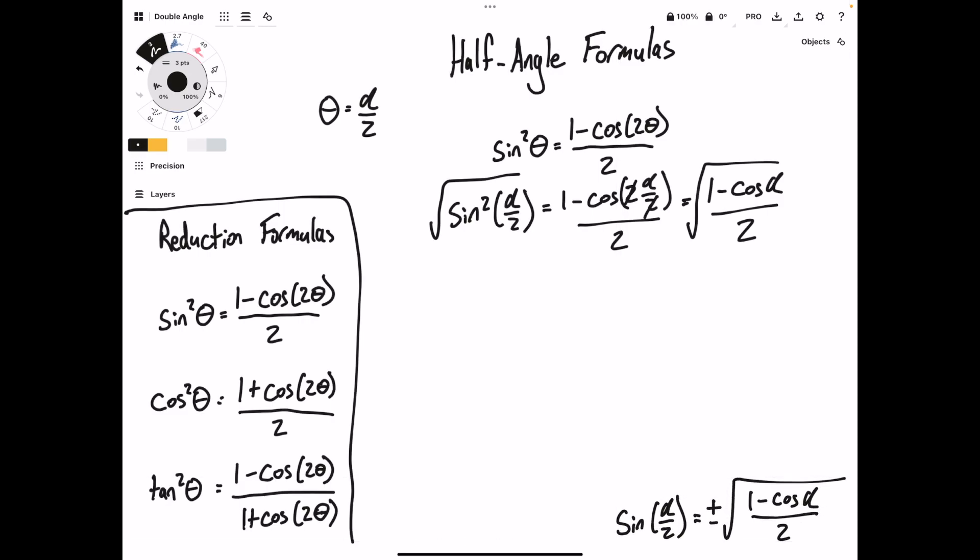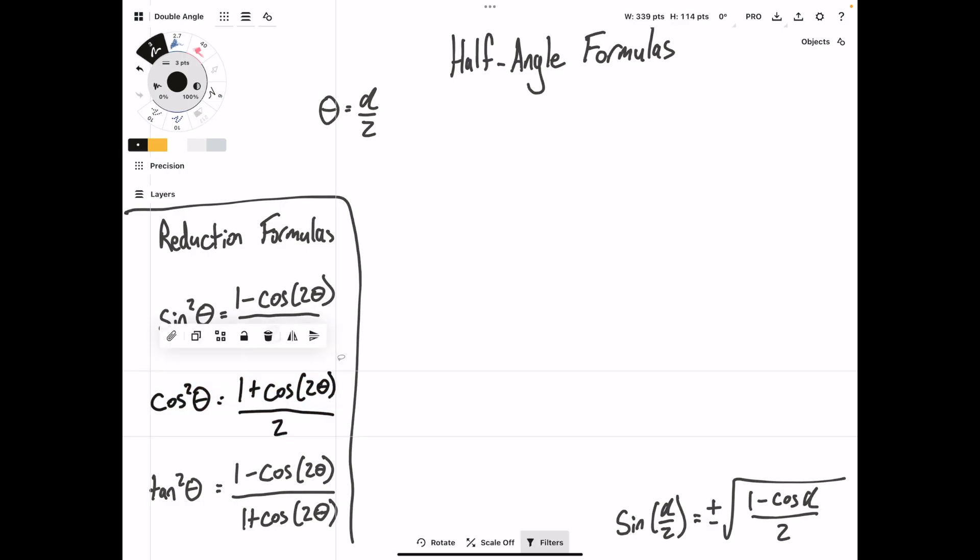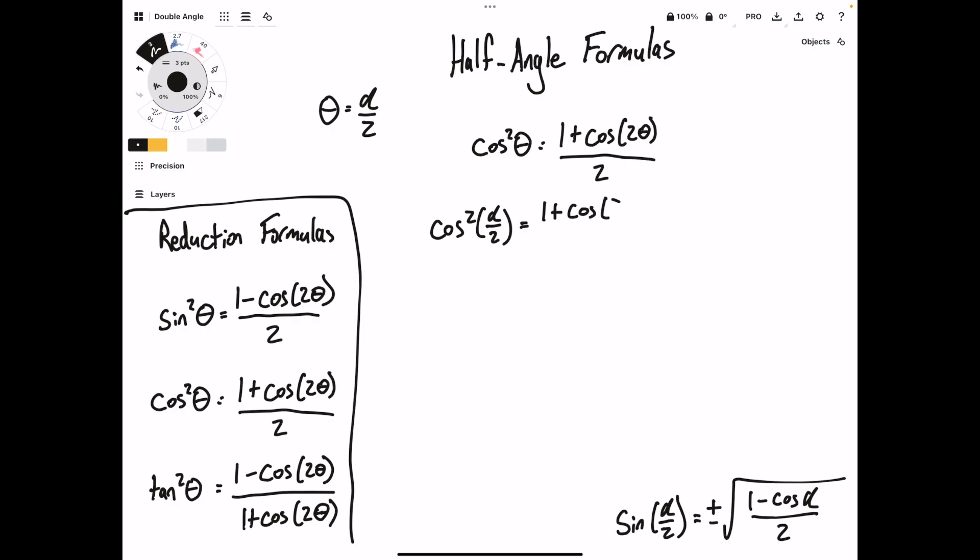Now, we will repeat the process for cosine. So again, we'll rewrite the formula using our new theta, where theta equals alpha over 2 equals 1 plus the cosine of 2 times alpha over 2, all over 2. Right side equals 1 plus cosine, 2's cancel, of alpha over 2.